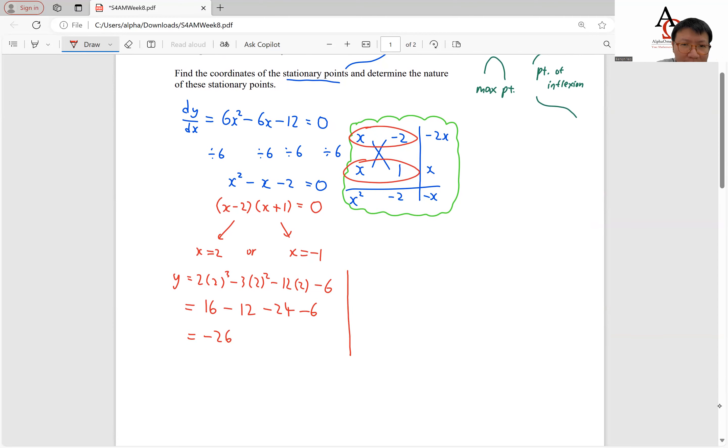And for x equals to negative 1, we will have y equals to 2 negative 1 cubed minus 3 negative 1 squared minus 12 times negative 1 minus 6. So we have negative 2 that will give us a negative 3 value as well, that's 12 minus 6. So negative 5, negative 11, we have 1 over here. So our two stationary point coordinates are given by 2 negative 26 as well as negative 1, 1.